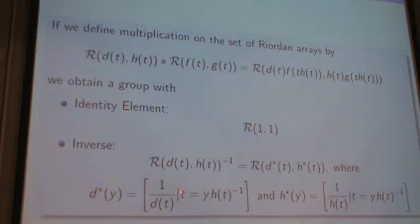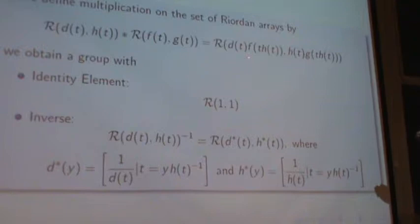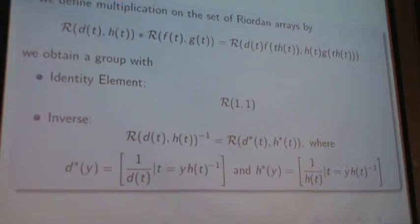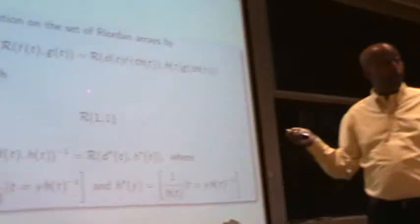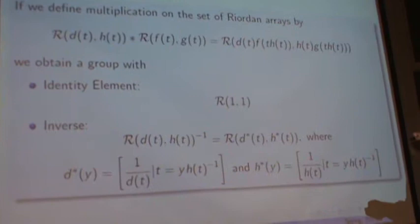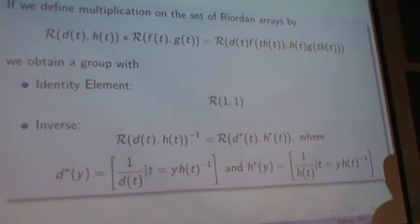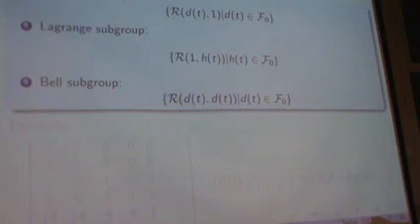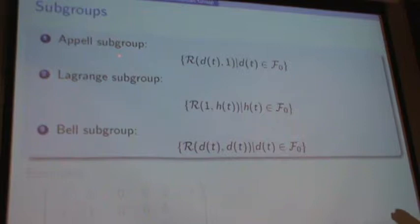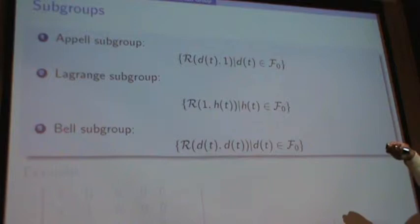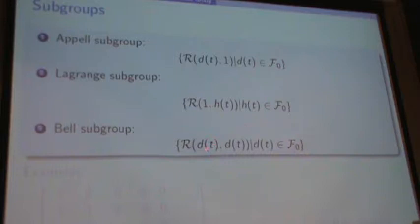That's why proper Riordan arrays were defined before. A collection of proper Riordan arrays with this multiplication gives a group structure. There are some notable subgroups: the Appell subgroup (when H of T equals one), the Lagrangian subgroup (when D of T equals one), and the Bell subgroup (when D and H are equal), as in the examples used previously in solving problems.